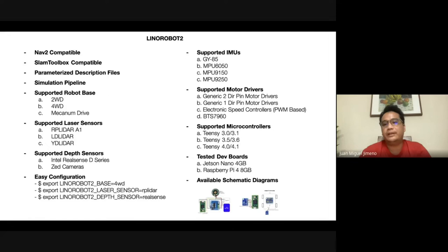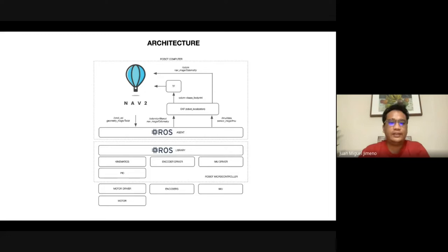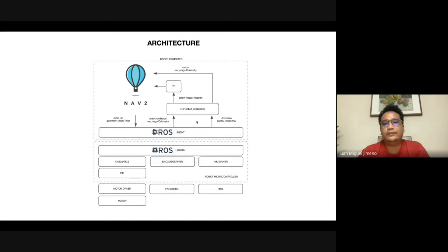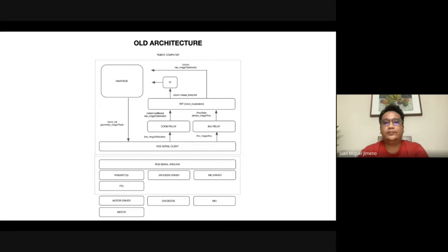On top of that, it also provides schematic diagrams for users to rebuild the robot at home. Here's the architecture of the project: the three main components are the hardware and sensors, the robot microcontroller where the micro-ROS Arduino library runs, and the robotics libraries. On top of that is the robot computer which runs all the ROS packages and allows you to run Nav2. The beauty of this is that all the odometry data and sensor data is directly published from the microcontroller itself.